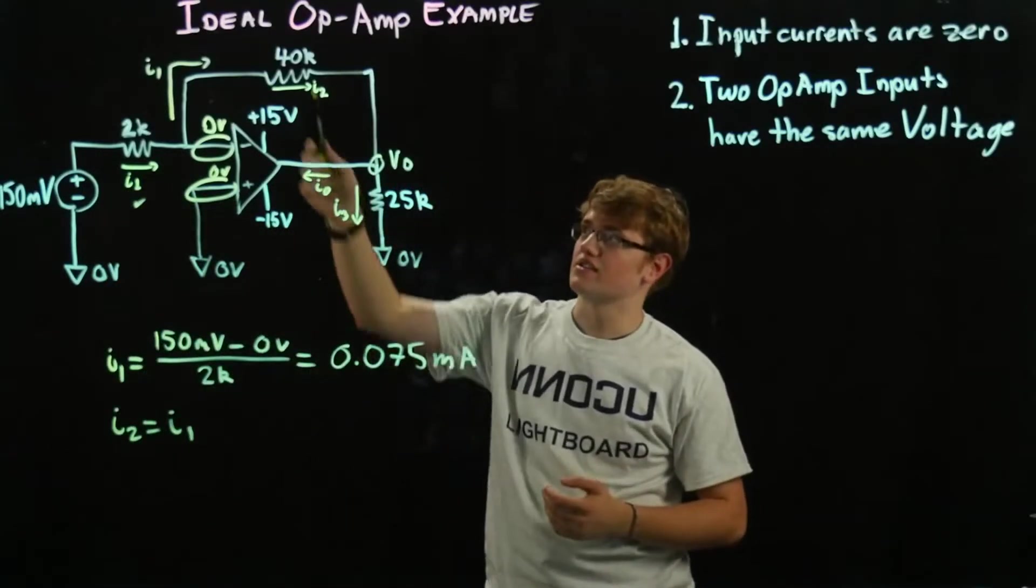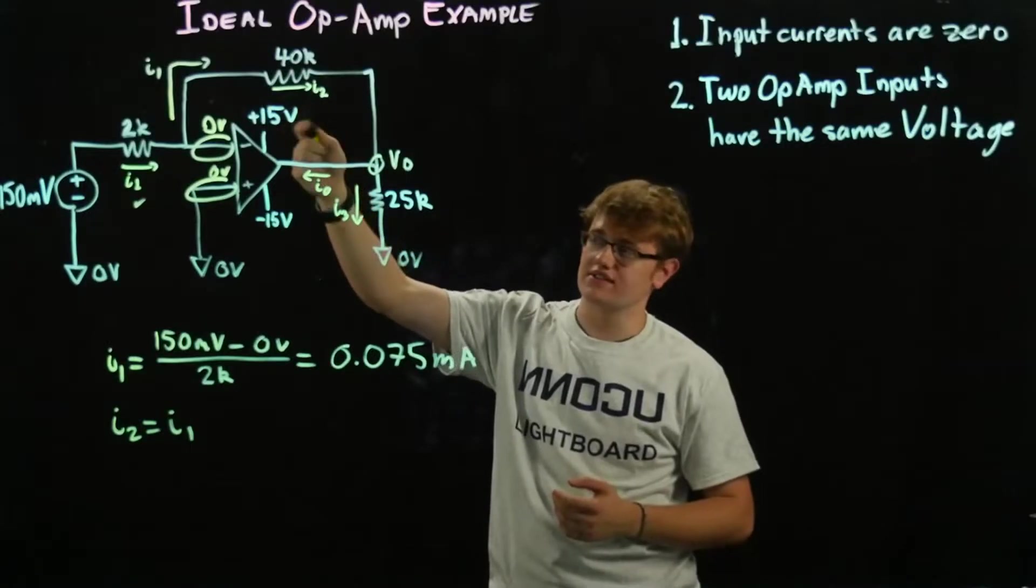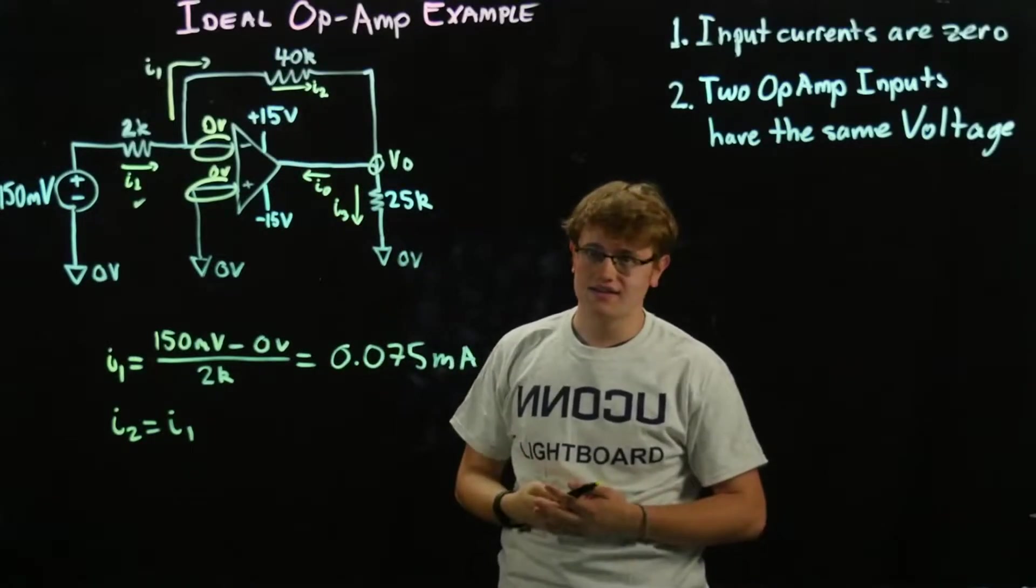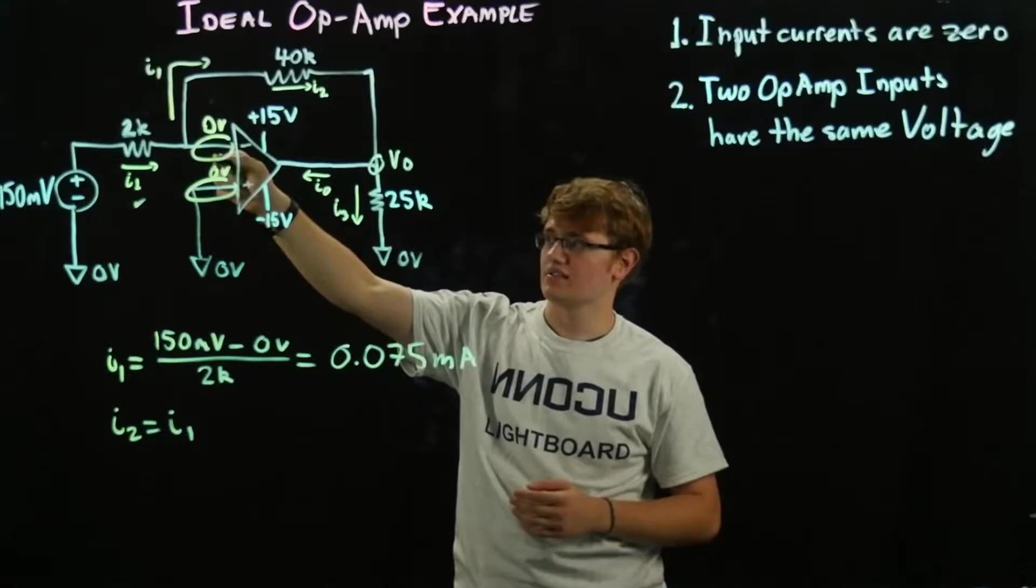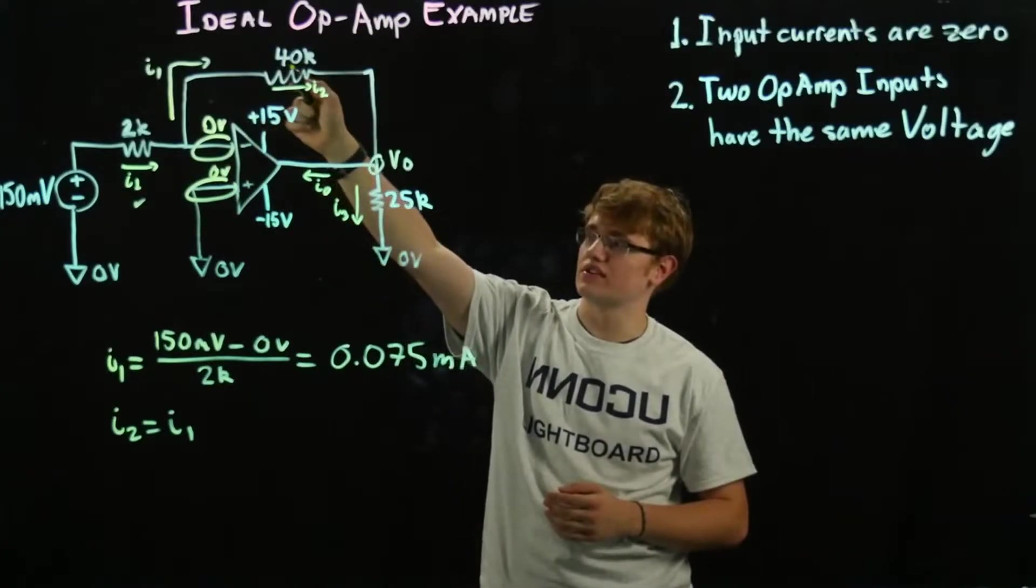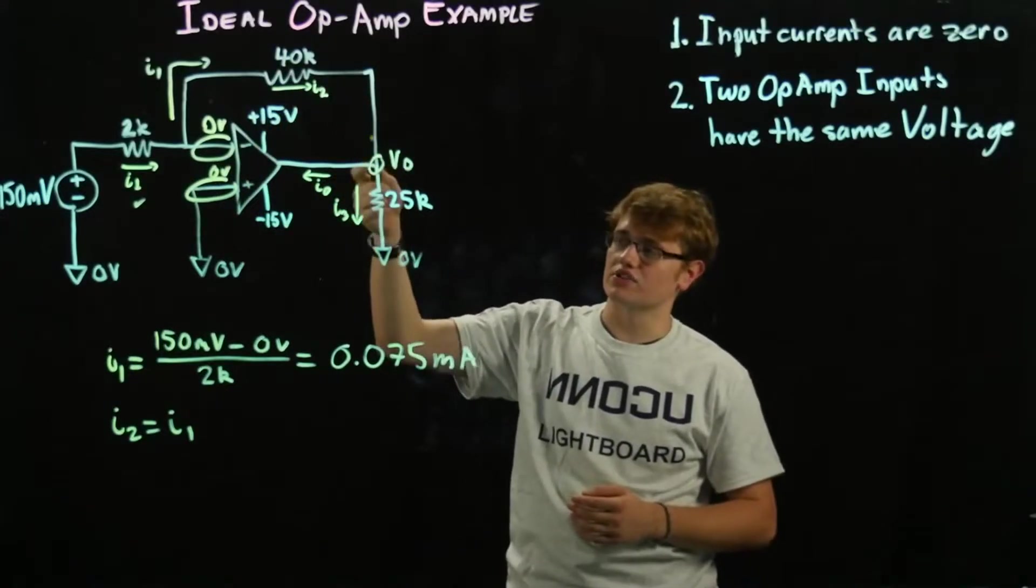And now we can find the voltage across this 40k resistor. Now why do we want to do that? Because we know this right here, we want to know this voltage, and then we want to know the Vout. We're trying to find Vout.